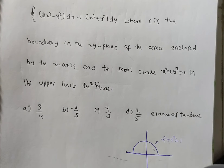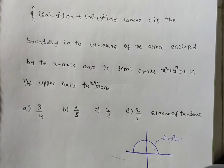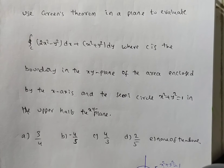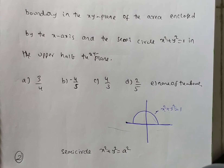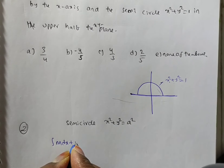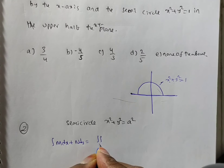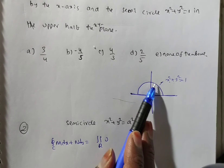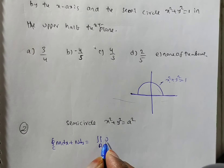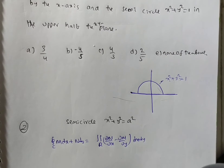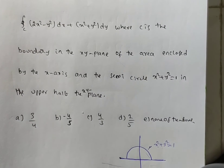Coming to the problem: they say 'use' Green's theorem, not 'verify'. Verify means you do both LHS and RHS. The statement of Green's theorem is: the integral over C of M dx + N dy equals the double integral over R of (∂N/∂x − ∂M/∂y) dx dy. C must be a closed curve — and here the boundary is indeed closed, so we can apply Green's theorem.